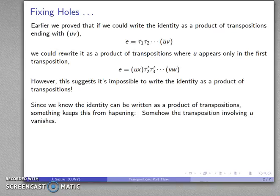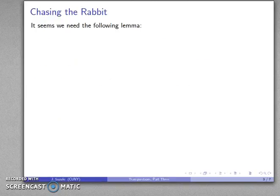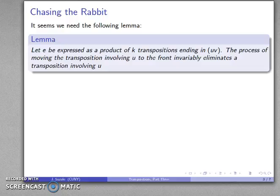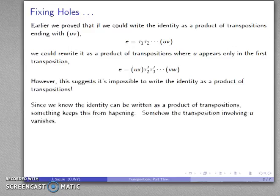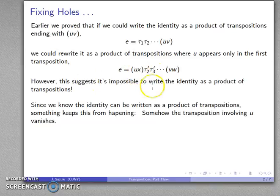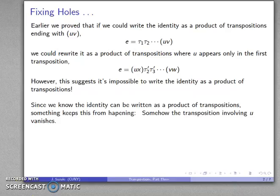Somehow, the transposition involving u vanishes. It seems we need the following lemma: let e be expressed as a product of k transpositions ending in something. The process of moving the transposition involving u to the front will invariably eliminate a transposition involving u. That is the only way we can prevent u from getting all the way to the front, because if u gets all the way to the front, we cannot write the identity as a product of transpositions. So somewhere along the way, a transposition involving u has to be eliminated.